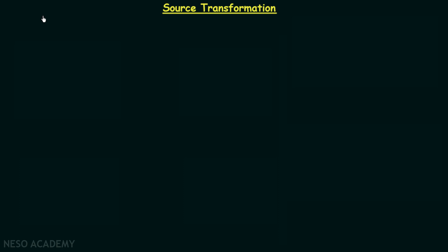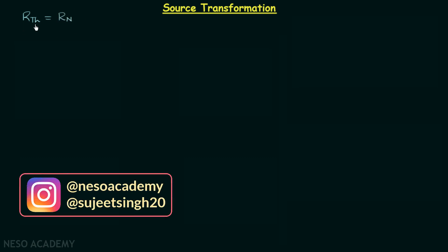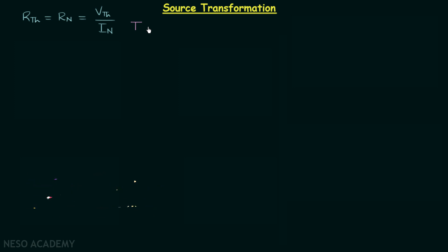In the previous lecture we had a discussion on Norton's theorem, where we saw that the Thevenin's equivalent resistance Rth is equal to Norton's equivalent resistance Rn, and they are equal to Thevenin's equivalent voltage Vth over Norton's equivalent current IN. We call it Thevenin-Norton transformation, because we use it to transform Thevenin's equivalent circuit to Norton's equivalent circuit and vice versa.